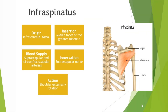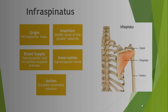The next muscle is the infraspinatus. Its name tells us that it's located below the spine of the scapula, and it sits within the infraspinatus fossa. The infraspinatus muscle inserts on the greater tuberosity of the humerus. The blood supply is the suprascapular and circumflex scapular arteries, and the muscle is innervated by the suprascapular nerve. The infraspinatus muscle performs lateral rotation, or external rotation, of the humerus.